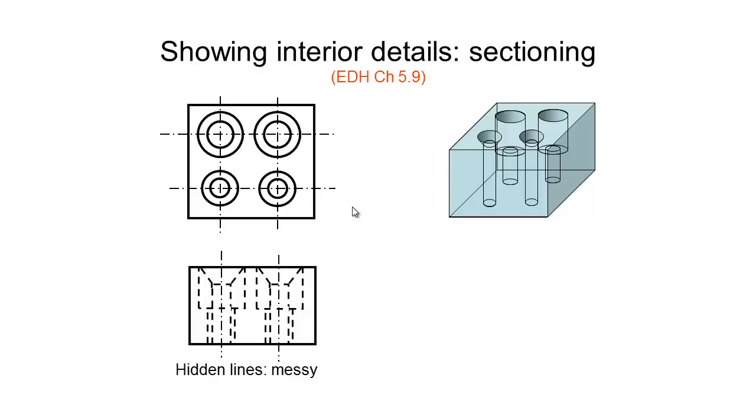You might use hidden lines but this is a very messy solution and can be very confusing. If the holes happen to all be of the same diameter you wouldn't be able to tell from these hidden line views which hole corresponds to which sort of tool that's being used. This is why we try and avoid the use of hidden lines because it can lead to quite a messy and confusing solution.